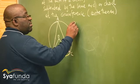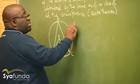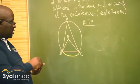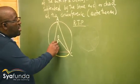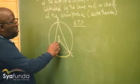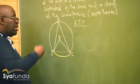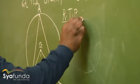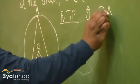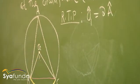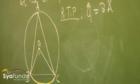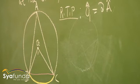Proof. Let me write the RTP — required to prove. We want to prove that angle O1 equals two times angle A, where O1 refers to angle BOC. So we want to prove that the angle at the center is two times bigger than the angle at the circumference: O1 equals 2A.